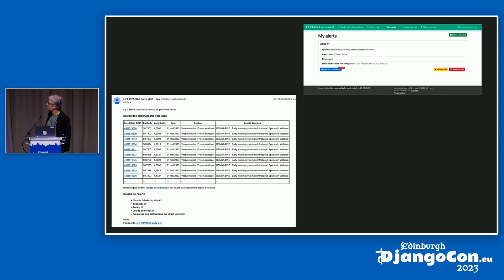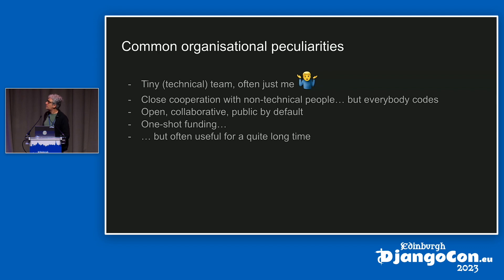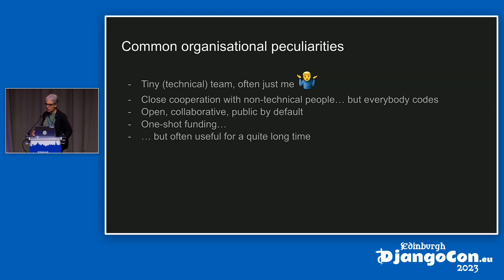Those are two examples of things we can do for biodiversity research, and I'll show more. I've worked in different companies and organizations, and now on my own. There are a few things about these projects that are quite different from most common development work. It's often small projects — which in a way is easy — but you're almost alone. You work in a team, but the other people are scientists, and you are the computer person. Everything related to software development, data, databases, front-end, back-end — it's just you, or maybe a few people. You work on small things, but essentially alone.